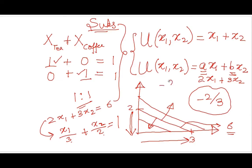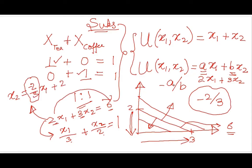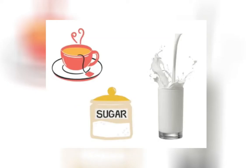Generalizing this, the slope is minus a over b. This makes sense because if I rewrite the line equation as x2 = mx + c, I get x2 = -(2/3)x1 + 2, confirming the slope is minus a over b for substitutes.